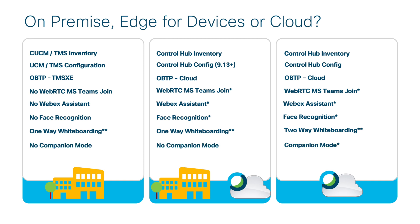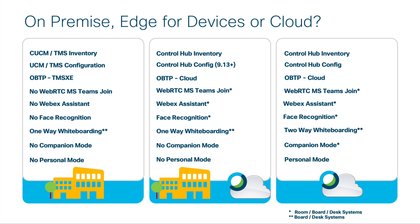Companion mode remains a cloud-only feature. If you need companion mode, you do have to be cloud-registered. I know a couple of people have hacked a way to make companion mode work for on-prem or hybrid, but officially supported companion mode does have to be cloud-registered exclusively. Finally, personal mode is something that you have to get from the cloud as well — at this point, you have to be cloud-registered to take advantage of personal mode.